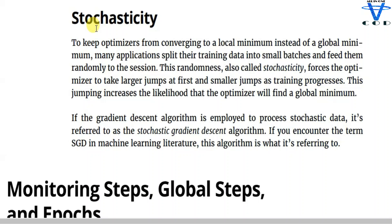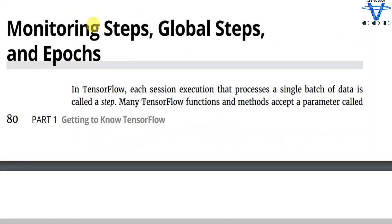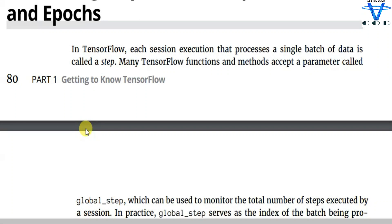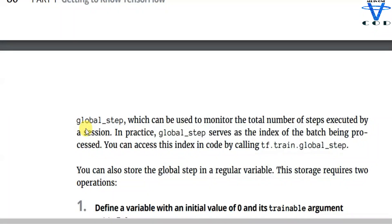Now let's move on to monitoring: global step and epoch. In TensorFlow, each session execution that processes a single batch of data is called a step. Many TensorFlow functions and methods accept a parameter called global step, which can be used to monitor the total number of steps executed by a session. Global step serves as the index of the batch being processed. You can access this index in your code by calling tf.train.global_step.